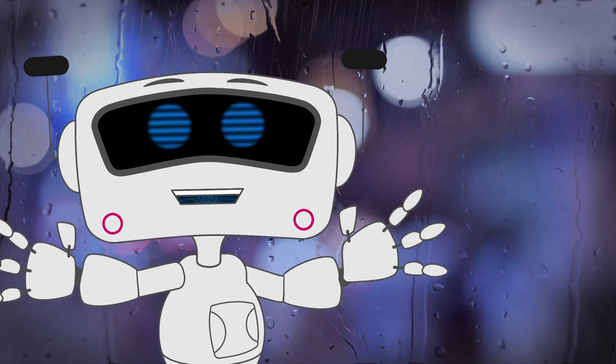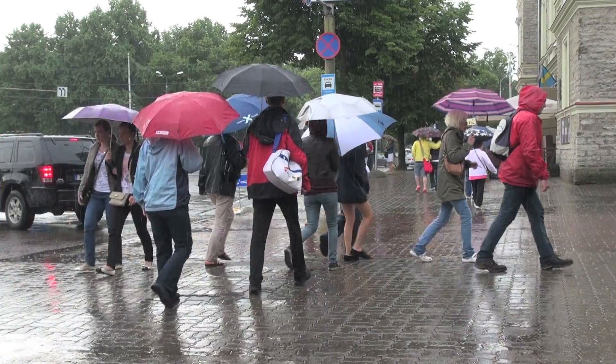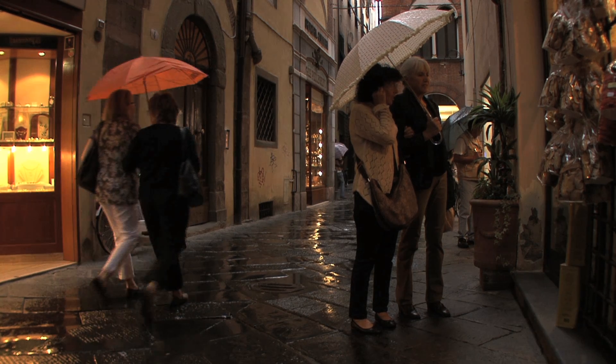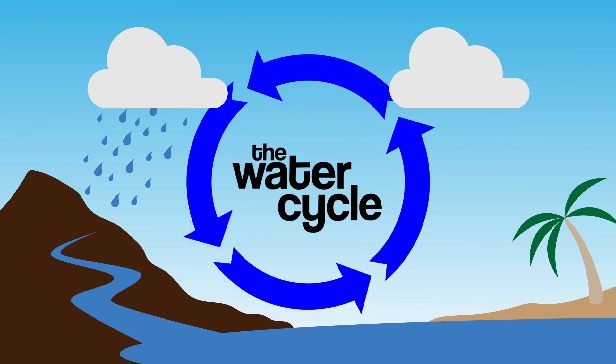Well, it kind of doesn't come from anywhere. It's always been here, and it never really goes anywhere. You see, rain is actually a part of a never-ending cycle called the water cycle.